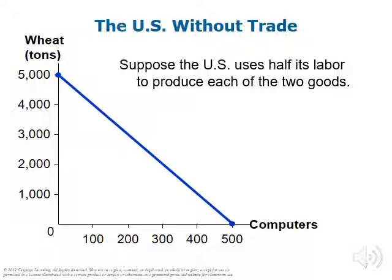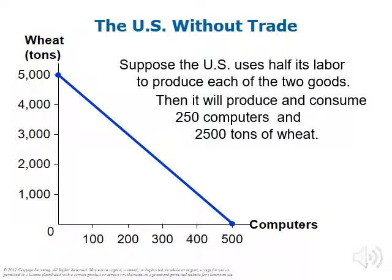This amount of production and consumption is what is possible for the U.S. if they were to be entirely self-reliant. Of course, the U.S. could choose any combination of wheat and computers that exists along the PPF. If they were choosing a combination inside the PPF, they would be operating inefficiently, and consuming a combination outside the PPF is, at the moment, impossible — the U.S. just doesn't have enough inputs to consume outside of the PPF.